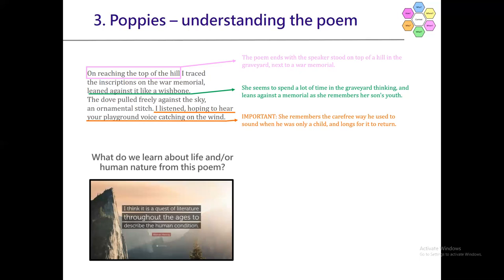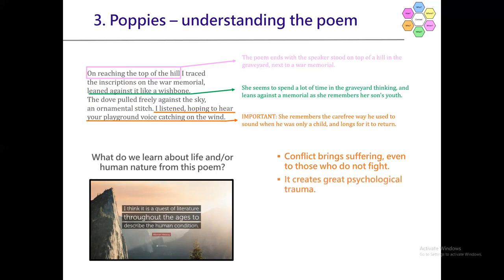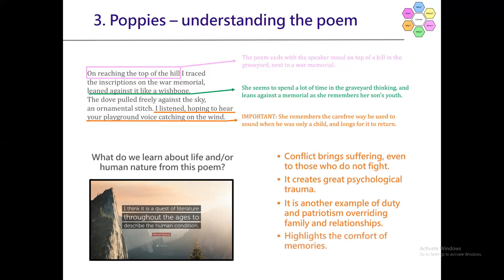Based on that, if the poem is about a mother's loss, feelings, and reactions to her son leaving for war, what do we learn about life and human nature? We learn that conflict brings suffering even to those who do not fight — it's an interesting perspective, the mother's perspective. It creates great psychological trauma. It's another example of duty and patriotism overriding family and relationships. It highlights the comfort of memories as a way of remembering what he used to be like, a time when she could control his safety. And naturally, it highlights the tragedy of war — the mass death.